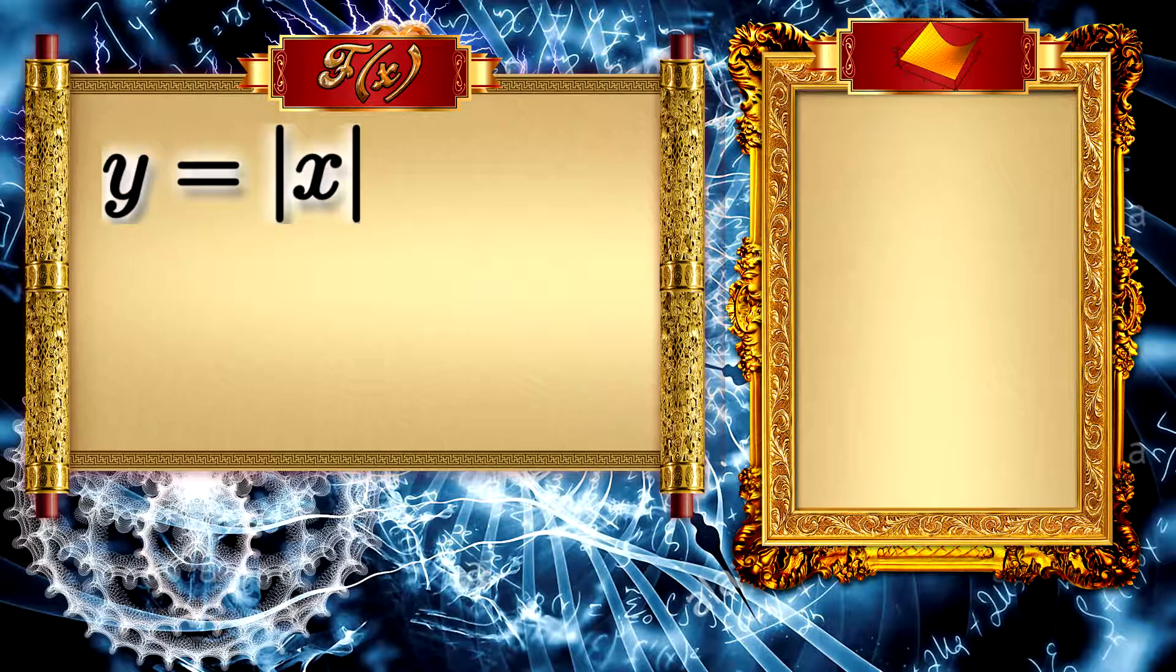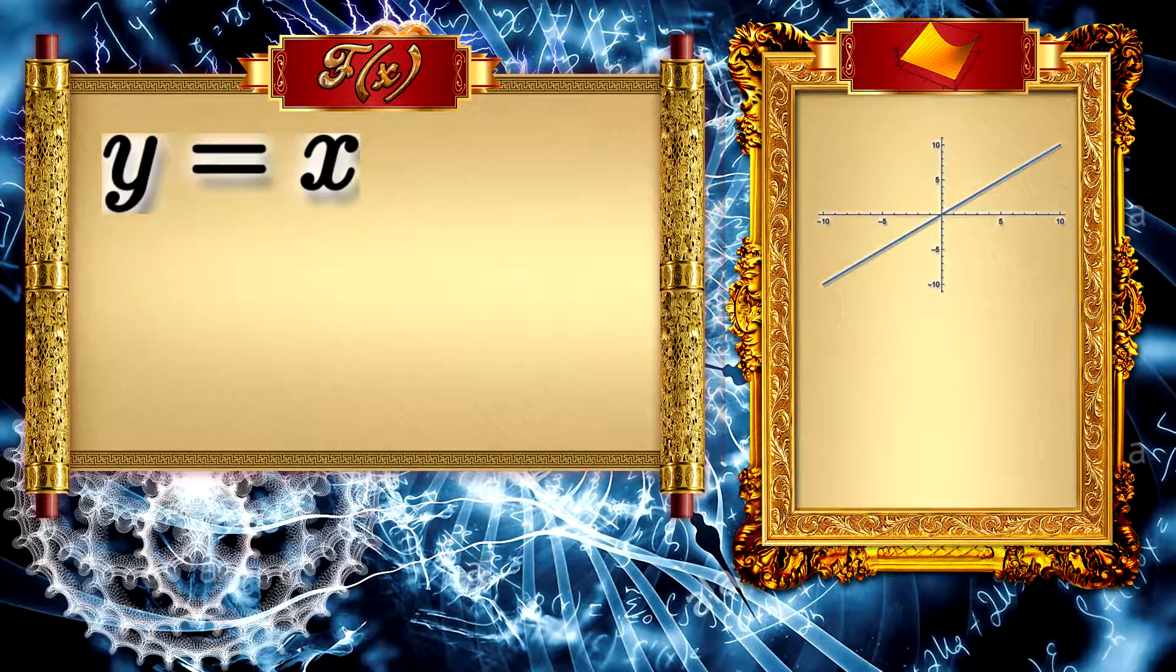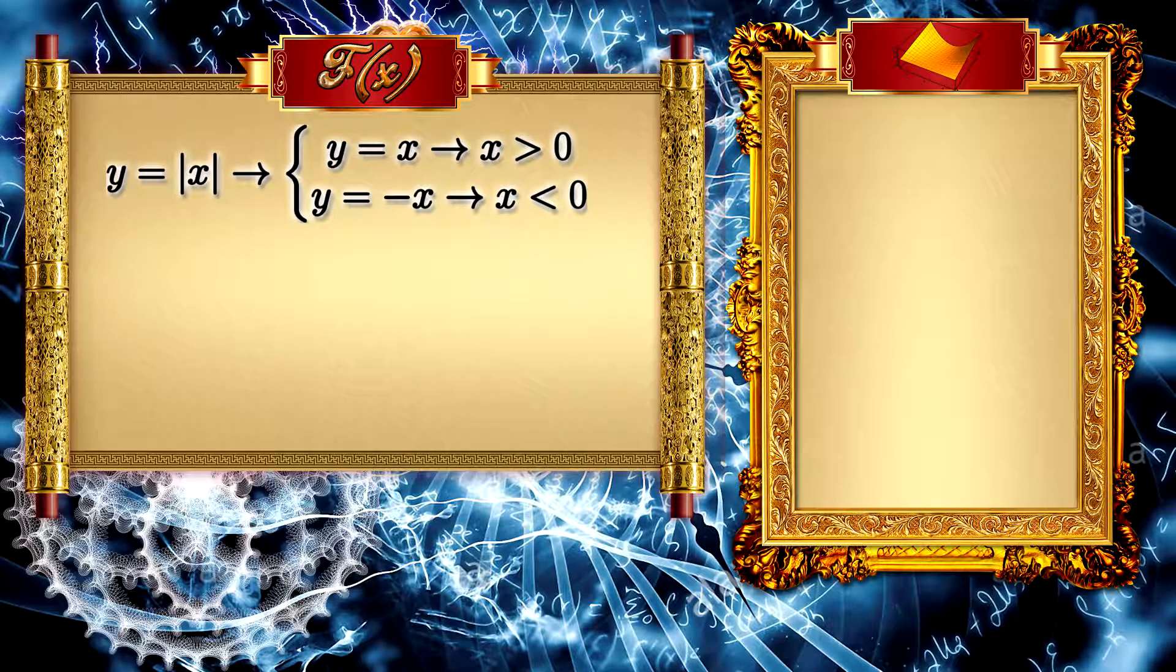Let the function Y be equal to the modulus of X. How is its module made? First, let's draw the function without the module. Note the values where the image is negative. Note that these values cannot be negative. So if module is a tool that makes negative turn positive, then just multiply by minus 1 the function when the value is negative.